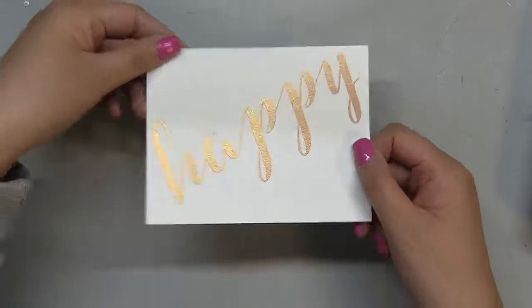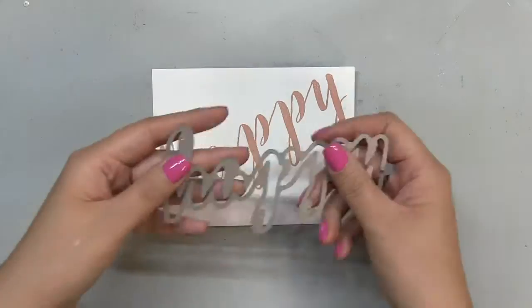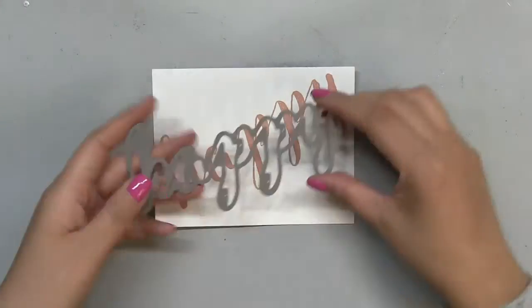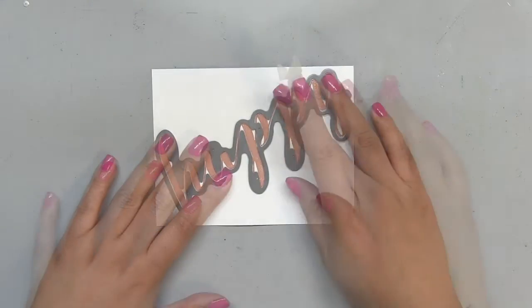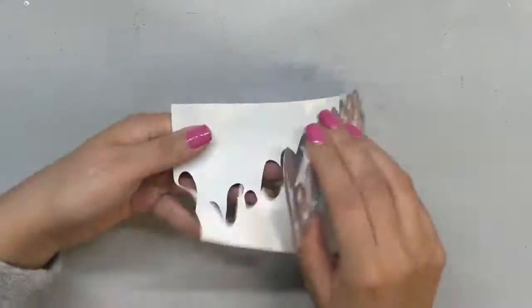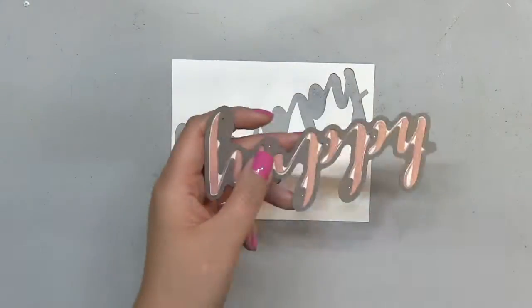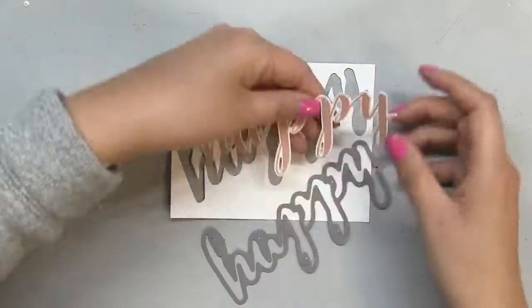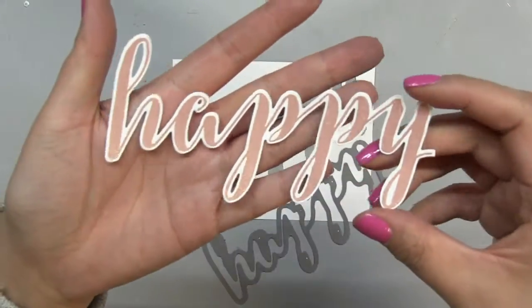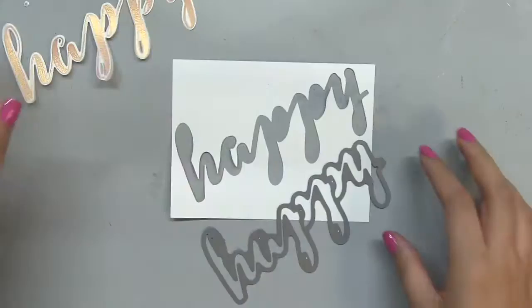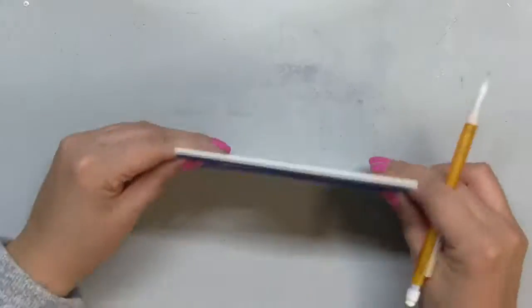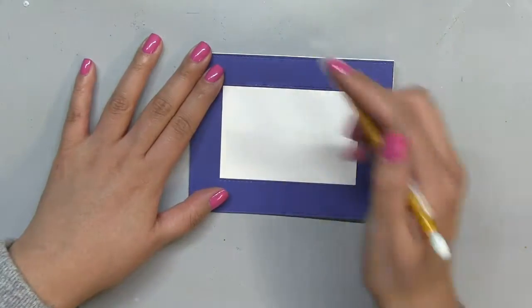After I finish heat embossing, I'm just going to die cut the sentiment using the coordinating die that came out a couple weeks ago. And what's great about this coordinating die is that it doesn't have a solid center, so you can see exactly where you're die cutting. All of the brush sentiment coordinating dies come like this, so it's very easy to die cut everything. You can see where you're die cutting because it has that open center.